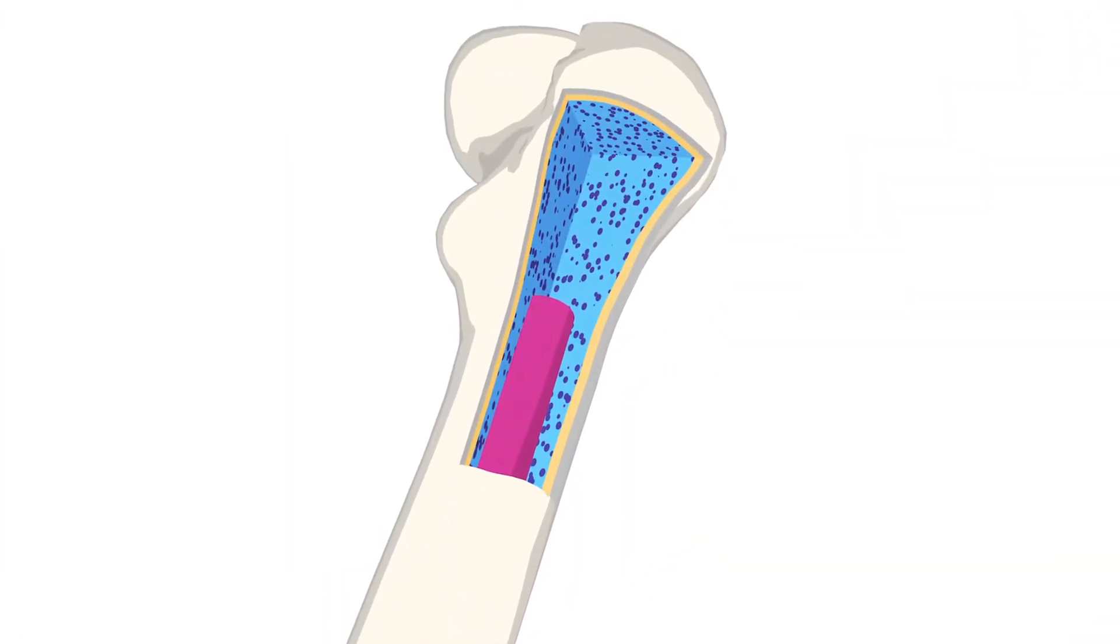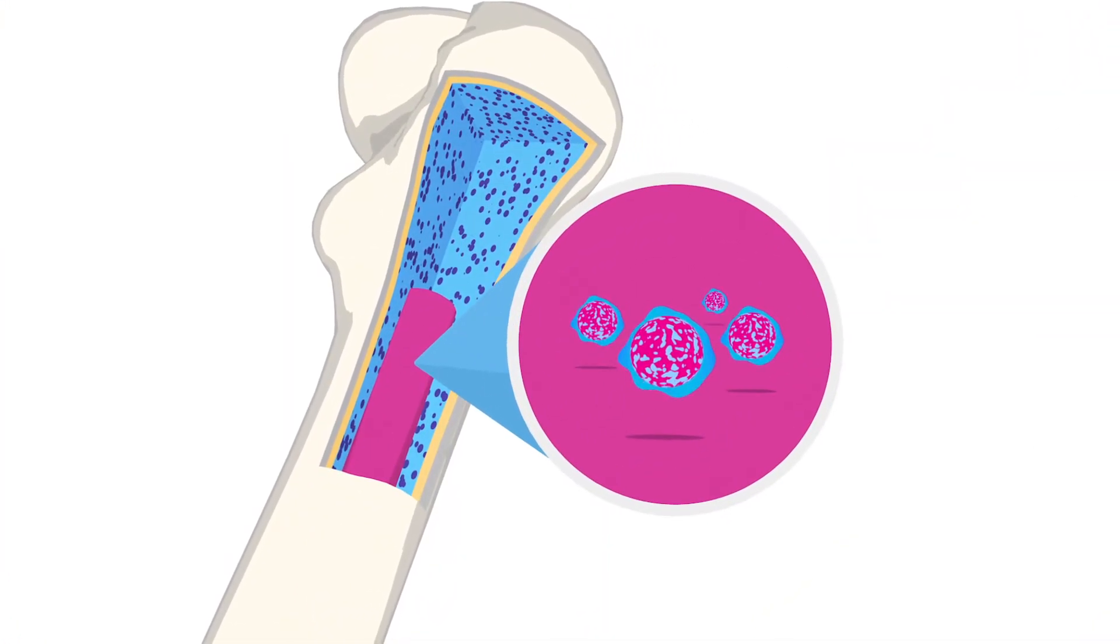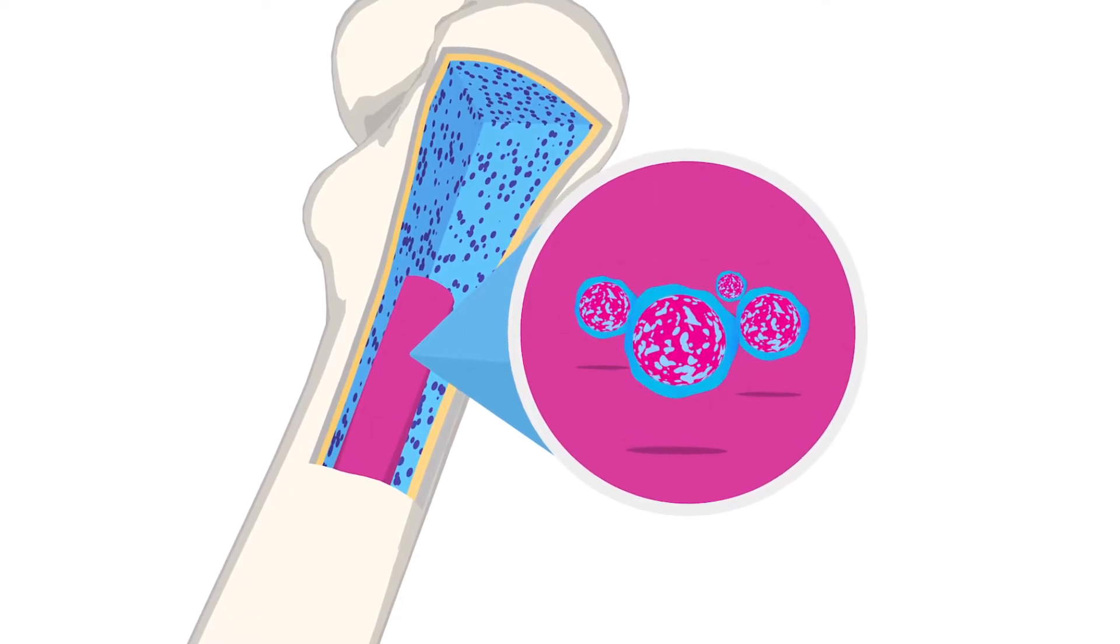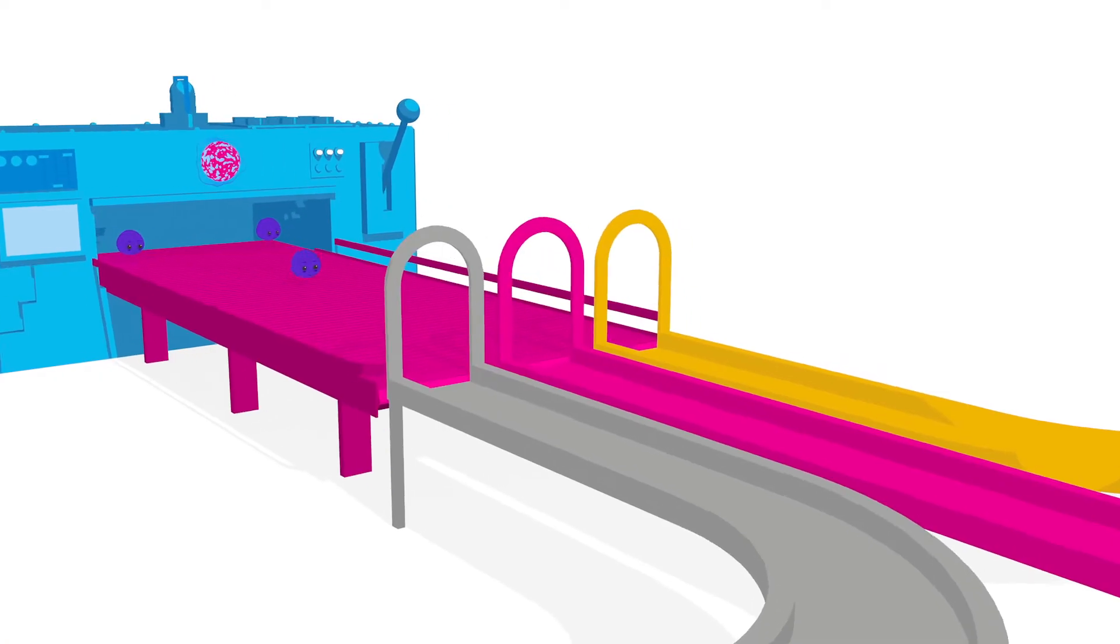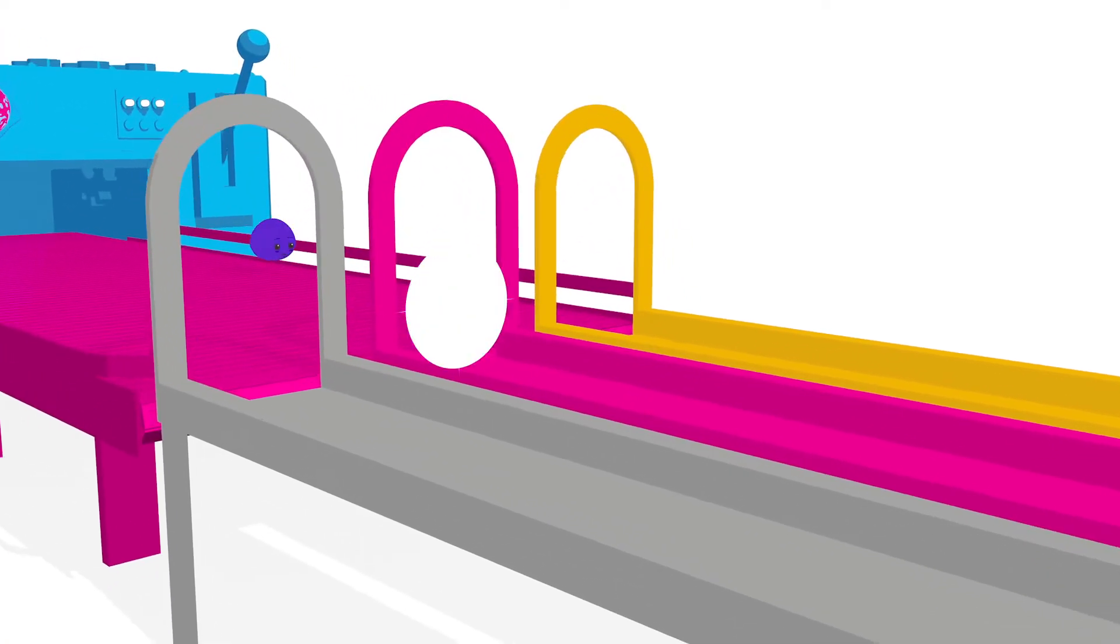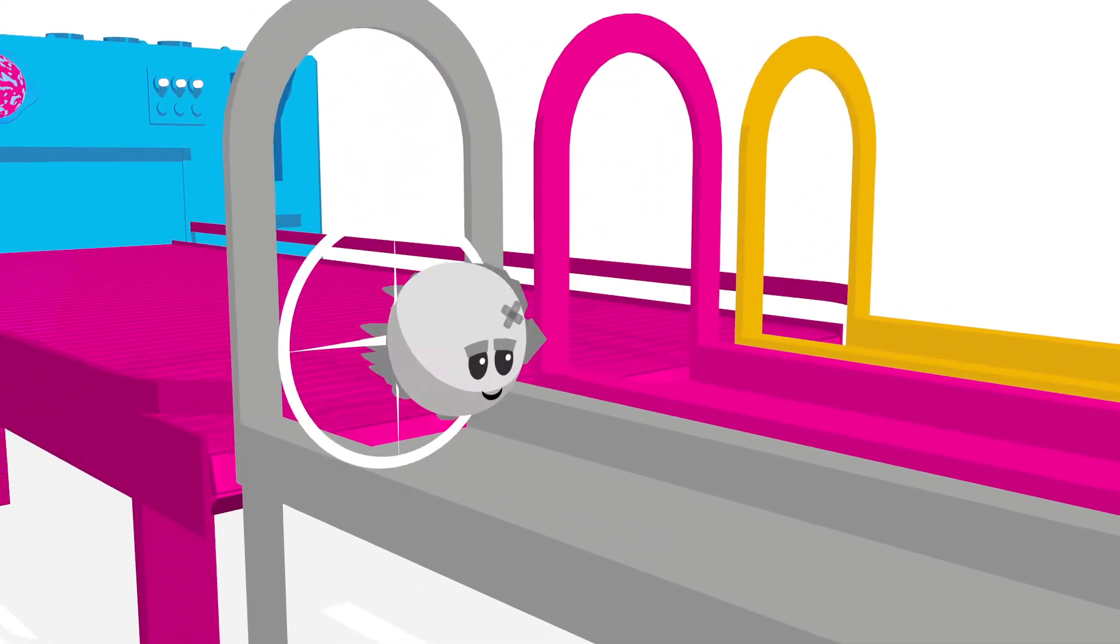Inside our bones is bone marrow, and it's where blood cells are formed from special cells called stem cells. Normally these blood factories pump out immature cells, which then mature into fully-fledged red blood cells, white blood cells or platelets.